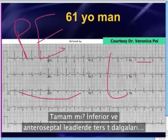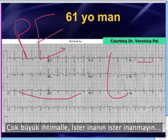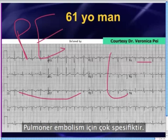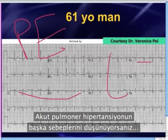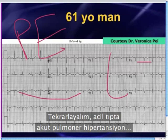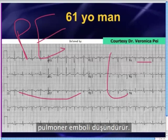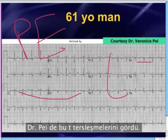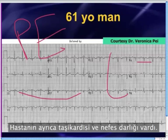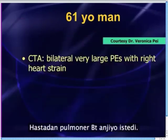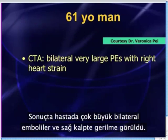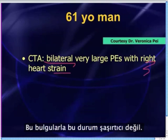T-wave inversions in the inferior and anteroseptal leads together are very highly specific — believe it or not, highly specific for pulmonary embolism, or any other cause of acute pulmonary hypertension. Dr. Pei saw these T-wave inversions in a guy who also had tachycardia and shortness of breath, and she got a pulmonary CTA. He had bilateral, very large PEs. He also had right heart strain, which is not surprising given that abnormality.